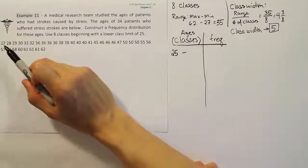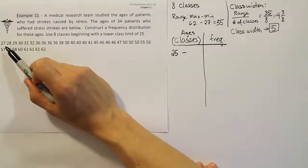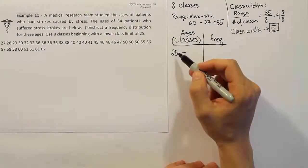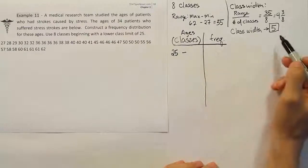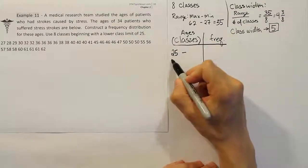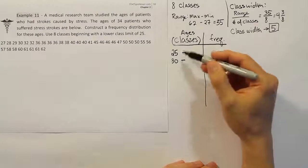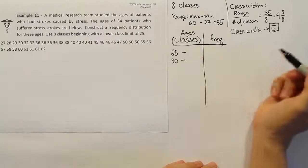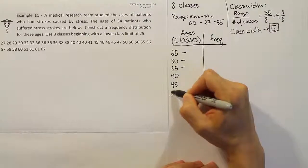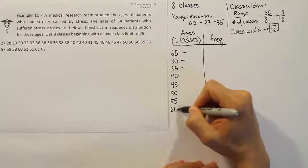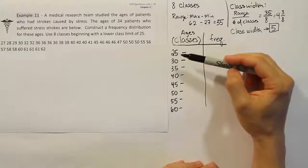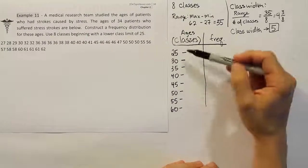To generate all the categories, we take the class width and add it to each lower class limit. Starting at 25 and adding 5 each time, we get: 25, 30, 35, 40, 45, 50, 55, 60. We stop at 60 because that gives us exactly eight categories — 1, 2, 3, 4, 5, 6, 7, 8. We don't need any more since we're only supposed to have eight.